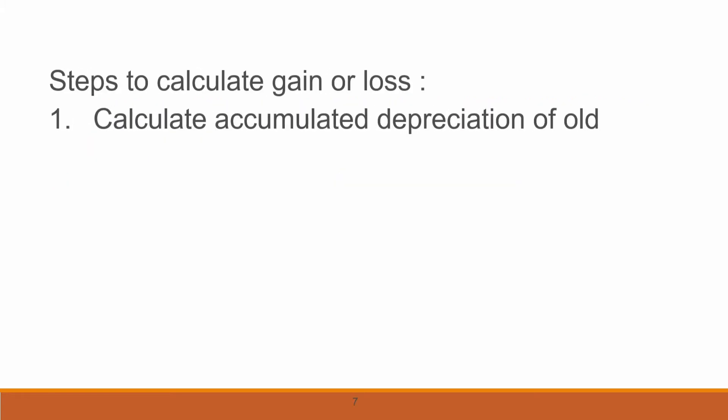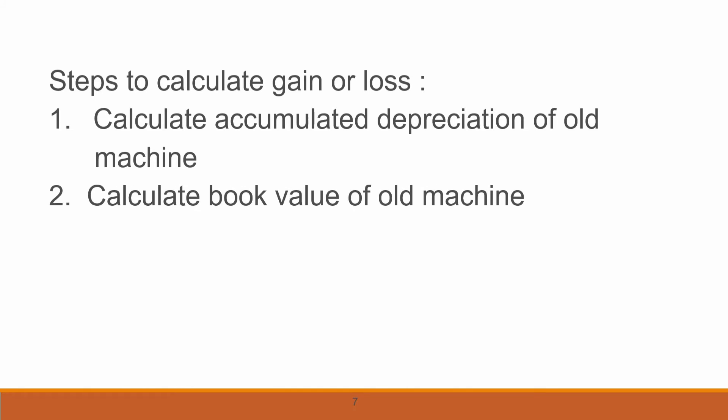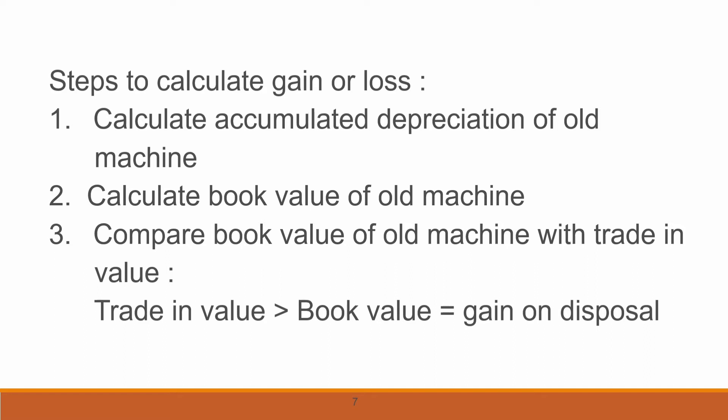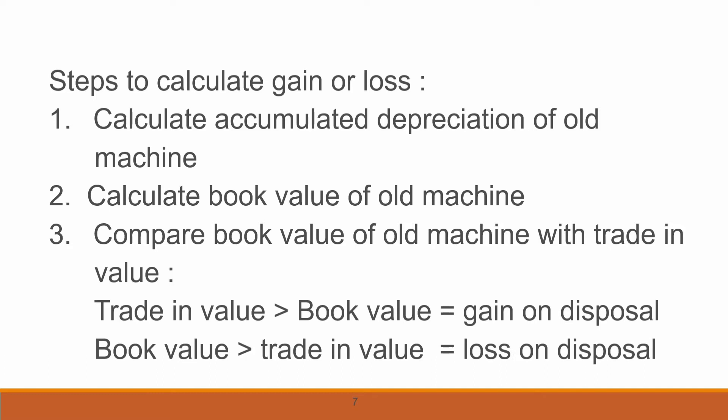Before we prepare the adjusted journal entry there are a few steps to calculate gain or loss. First, calculate accumulated depreciation of the old machine. Second, calculate the book value of the old machine. Third, compare the book value of the old machine with the trade-in value. If trade-in value is greater than book value, we get a gain on disposal. If book value is greater than trade-in value, we get a loss on disposal.